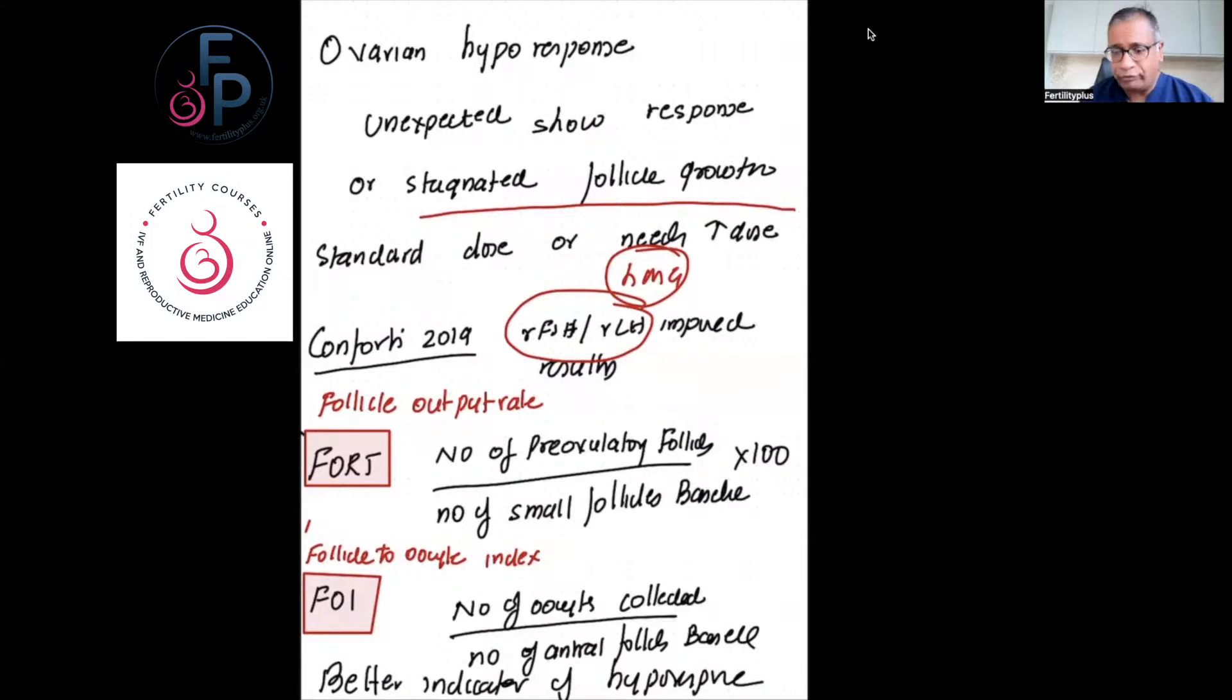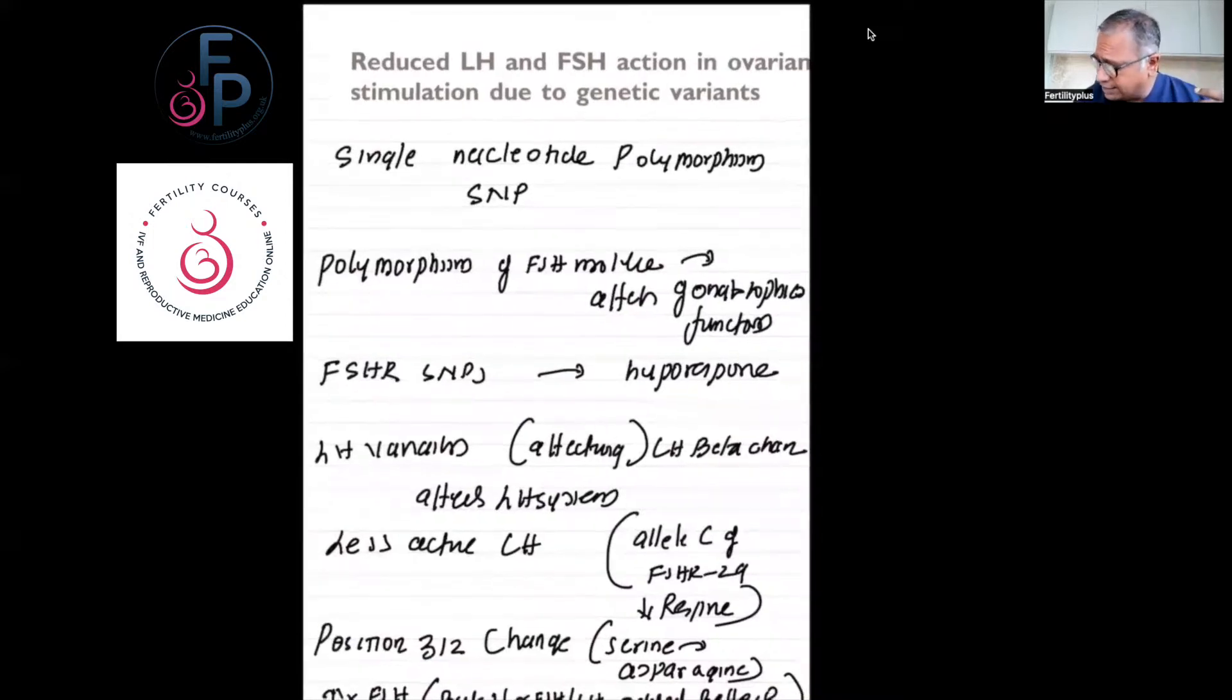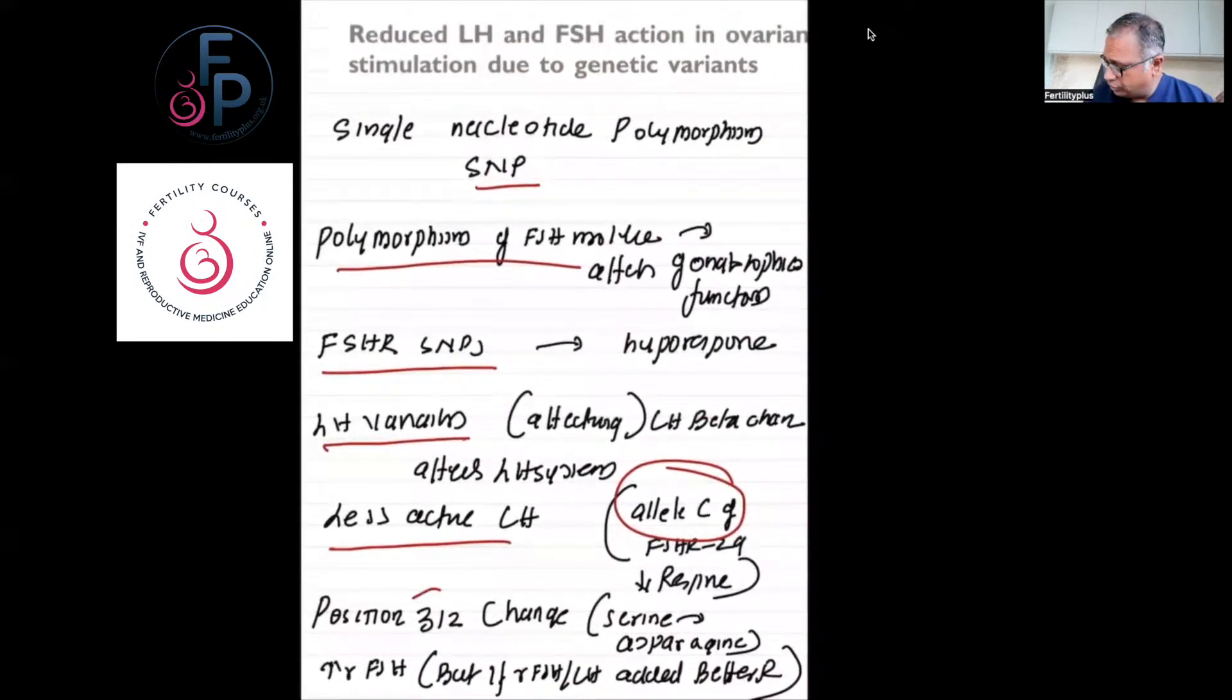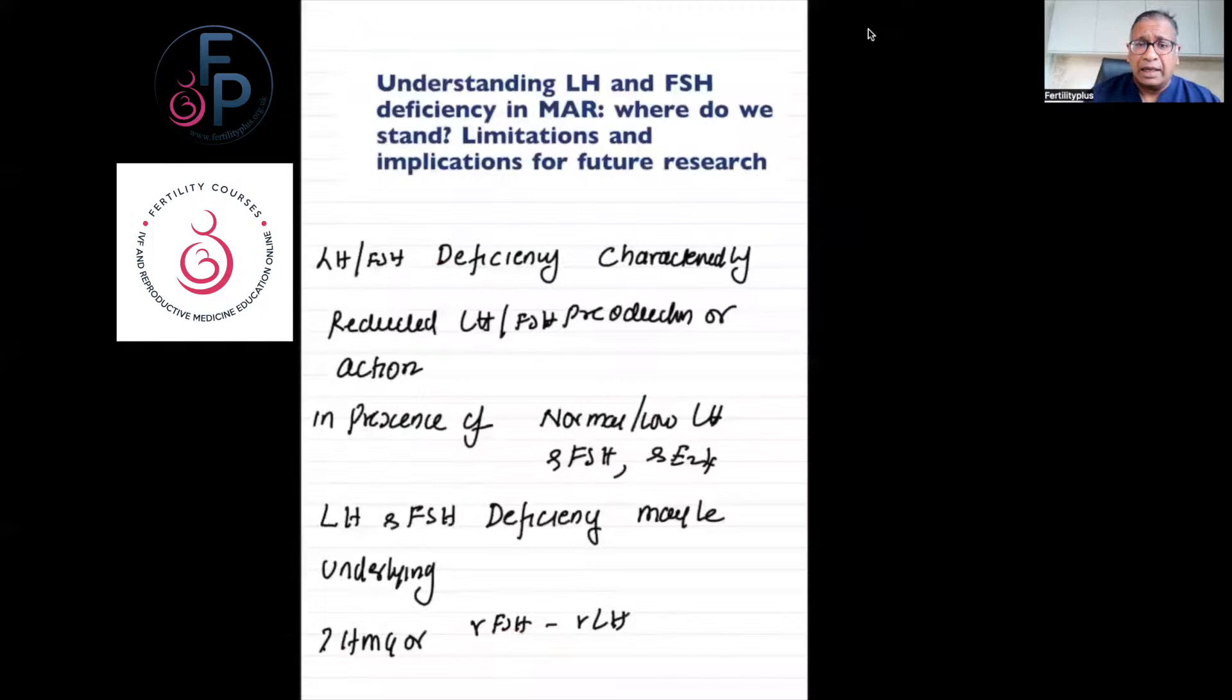You can also see reduced LH and FSH action in ovarian stimulation due to genetic variants. There are many—you're looking at SNPs, polymorphism, FSH receptor SNPs, LH variations, less active LH, position 312 change. These are very much in research and are very complex things. At present, this is one of the most challenging aspects of assisted conception.